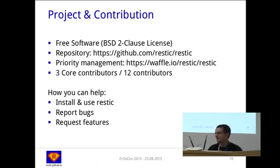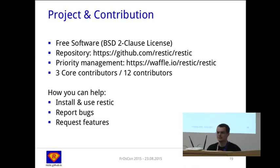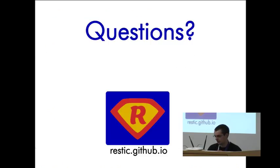At the moment it's free software and it will stay free software — it's a two-clause BSD license. You can find the repository on GitHub. We're using an agile-style workflow as far as you can for an open-source project with a distributed developer base. At the moment we have three core contributors and 12 other contributors. You can help by using RESTIC, reporting bugs — we're grateful for all bug reports — and requesting features we may not have seen yet.